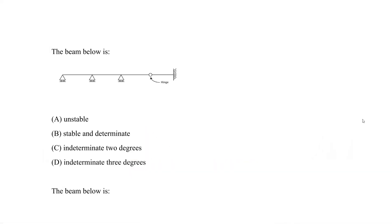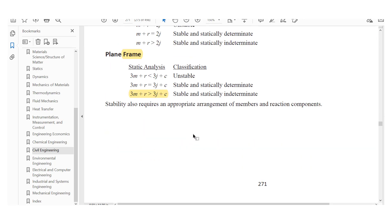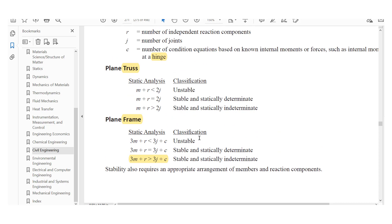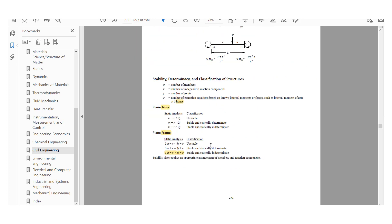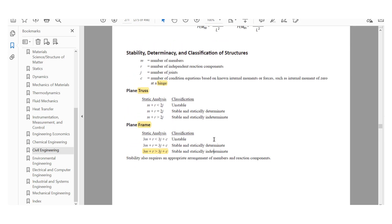Now let's look at beams and find the determinacy — is it stable, unstable, stable and statically determinate, or indeterminate and with how many degrees? For beams, these rules and steps are not provided in the reference handbook, but it's going to be quite simple, and that's why they likely omit it. You still need to know it in preparation for your FE exam.